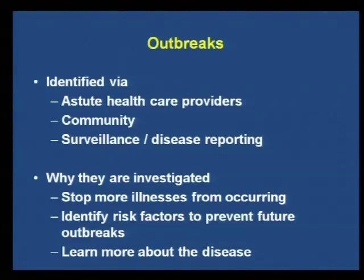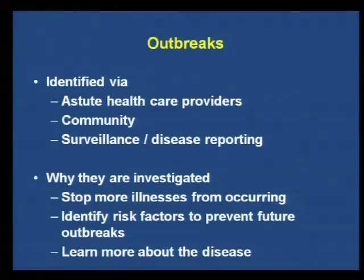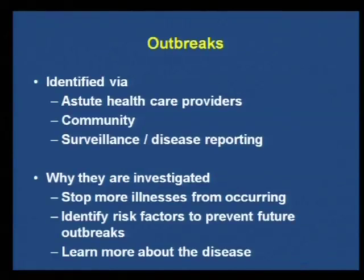Why do we investigate outbreaks? First and foremost, we want to stop the illnesses from occurring. But we also want to identify risk factors to prevent future outbreaks — if we can trace something back to a contaminated field, get food recalled, or close down a restaurant with poor health practices, we do that to stop people from getting sick in the future, not just those linked to the current outbreak. We may also learn more about the disease, such as finding a new strain of Shigella that isn't supposed to be in Iowa but is now propagating in the community.